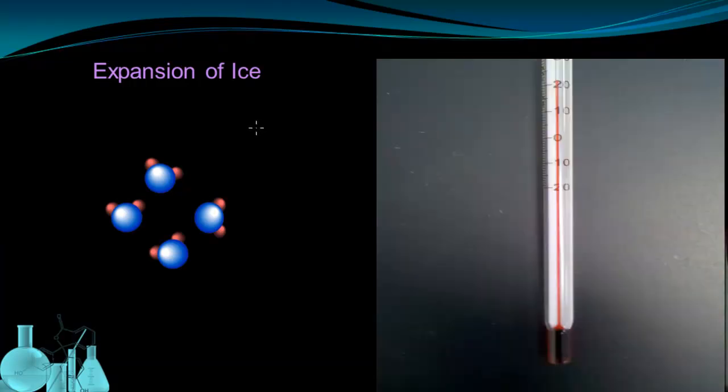That's in essence how regular thermometers work, like the one shown in the picture here. As the temperature gets colder, the liquid molecules get closer to each other, and you see the level of the liquid drop because it's taking up less volume. If the temperature goes up, the liquid expands, and the liquid goes further up the thermometer, and we see a higher temperature reading. That's how most liquids behave.